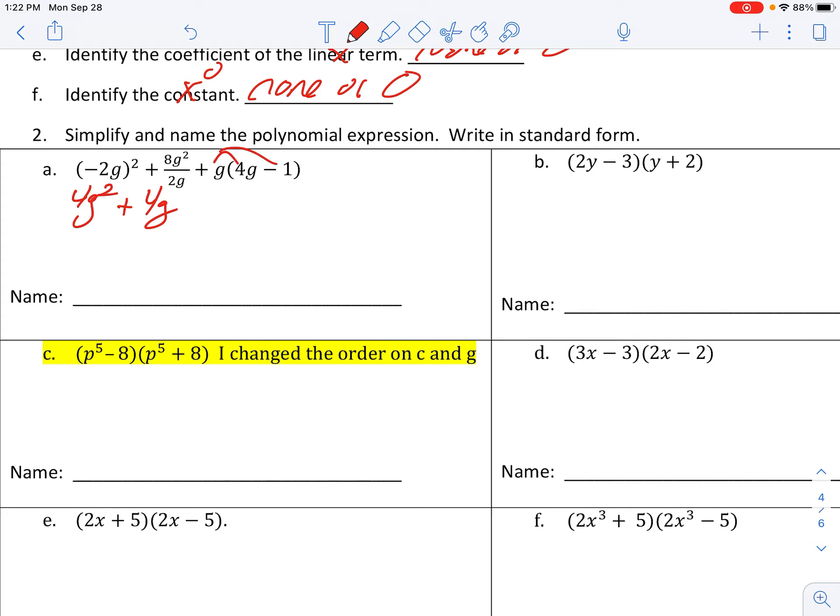And then distribute. And now combine like terms to put it into standard form. Four g squared plus four g squared, eight g squared. Four g minus g is three g. So what is that? A quadratic binomial.